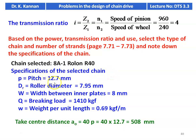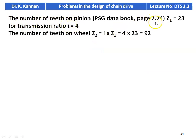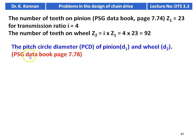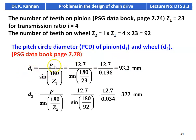Specification of the selected chain: pitch = 12.7 mm, roller diameter = 7.95 mm, width between inner plates = 8 mm, breaking load = 1410 kgf, weight per unit length = 0.69 kgf/m. Center distance: A0 = 40 × pitch = 40 × 12.7 = 508 mm — initial center distance is 508 mm. For speed ratio I = 4 from page 7.74: Z1 = 23 teeth on pinion. Z2 = I × Z1 = 4 × 23 = 92 teeth on wheel. PCD of pinion: D1 = 12.7 / sin(180/23) = 12.7 / 0.136 = 93.3 mm.